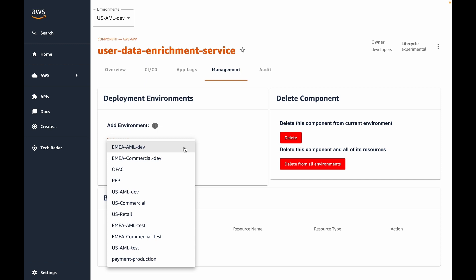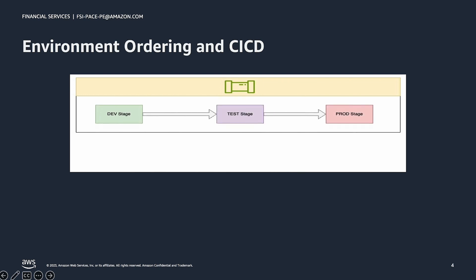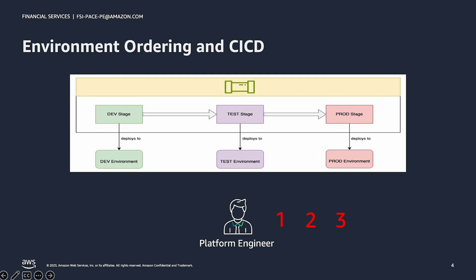Another important point about the dropdown choices is that they appear in a specific order. To understand this, imagine that we want our application to eventually be deployed to three environments: dev, test, then prod. We would expect our application's CI-CD pipeline to first deploy to dev, then test, then prod. The platform engineer would set the order for the dev environment to a low number like 1, the test environment to a higher number, and the prod environment to an even higher number. By setting the environment order, the platform engineer controls the order that environments appear in the dropdown and ultimately the order they run in the application's CI-CD pipeline.